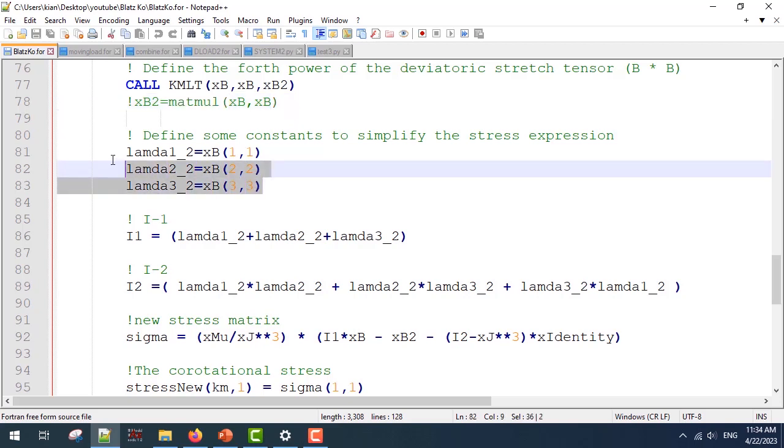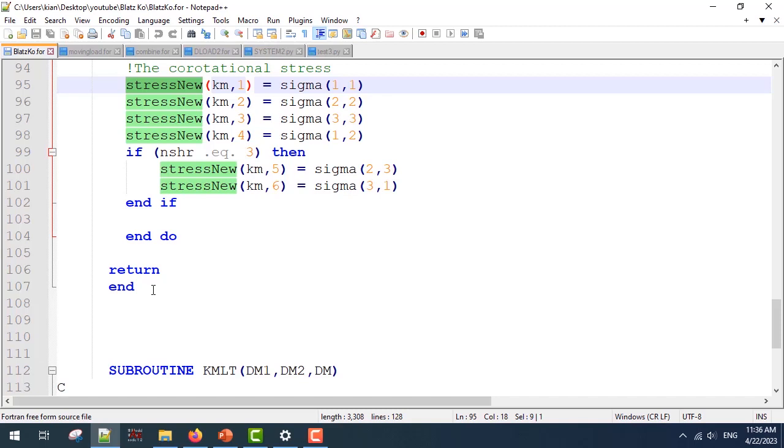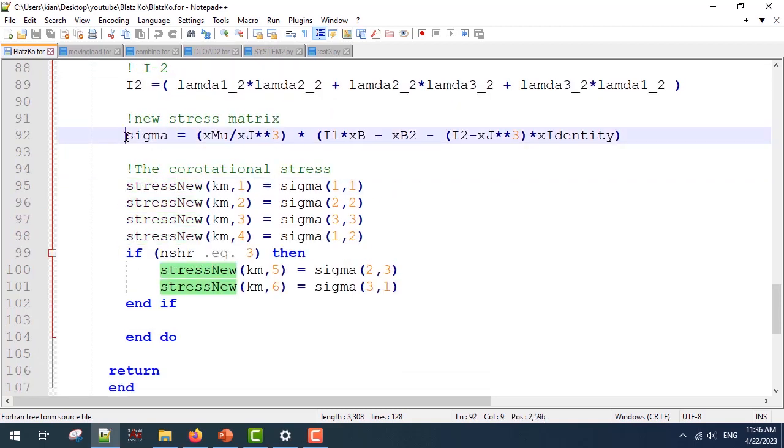Next, we are defining lambda 1 power 2, lambda 2 power 2, lambda 3 power 2 to be used for the first and second invariant, and the main part is going to give us the sigma matrix. It is the form I've shown you in the PowerPoint, and finally we have to reorder the sigma matrix according to the VUMAT format, which I've written here. The final part is going to give us the stress new vector from which ABAQUS calculates the new stress components, and this is the end of the subroutine.